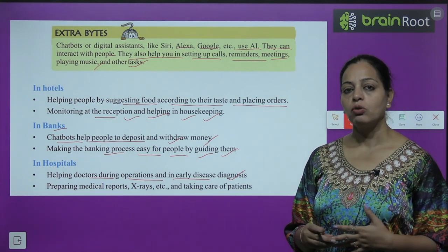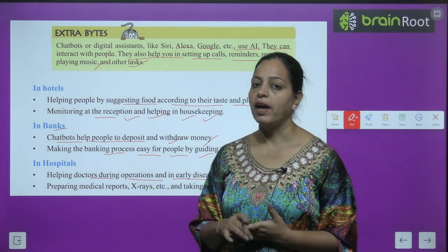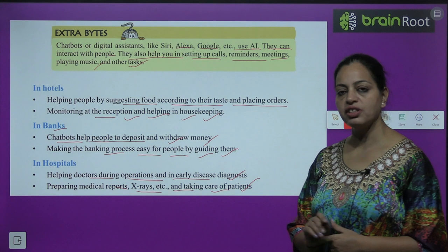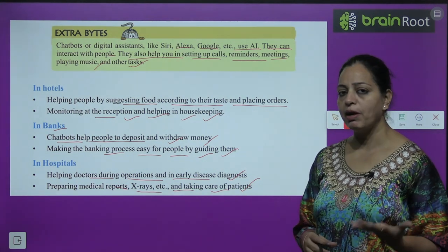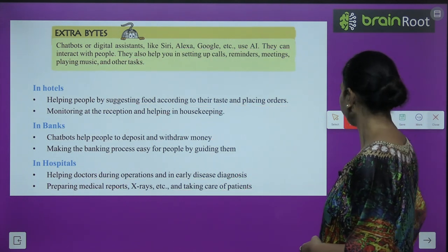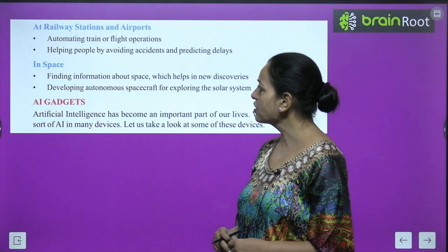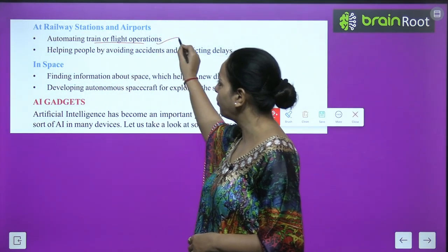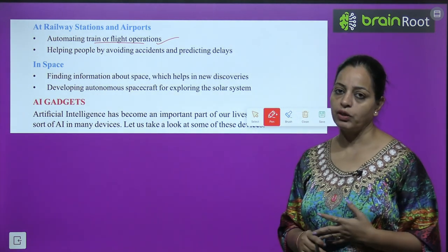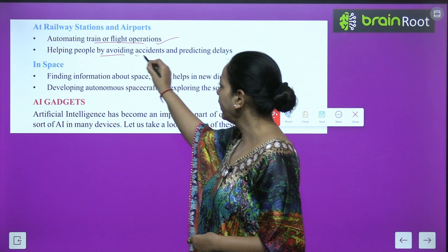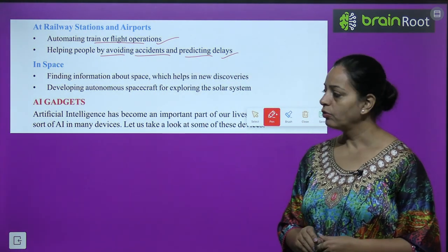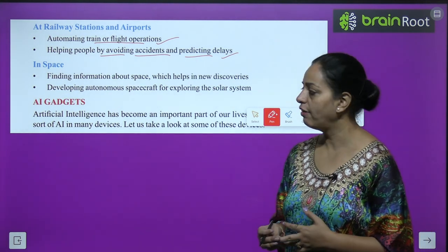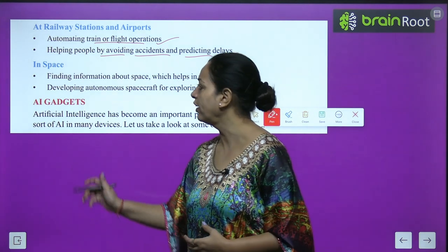In hospitals, AI helps doctors diagnose patients quickly, identify health issues, and help them recover faster. It also helps in preparing medical reports, X-rays, and taking care of patients. At railway stations and airports, AI helps in automating train and flight operations, providing information about flights and routes, helping avoid accidents, and predicting delays.